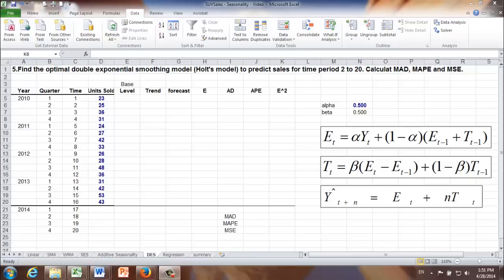Double exponential smoothing model is also called Holt's model. Here are the formulas for double exponential smoothing model. As we can see, we need some parameters, alpha and beta.